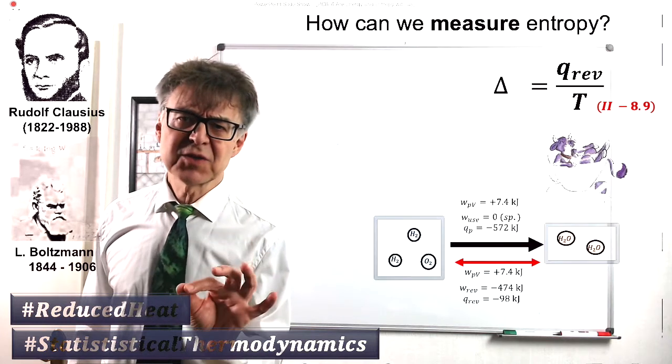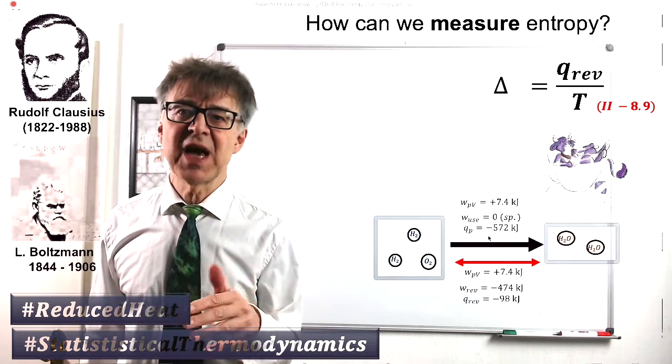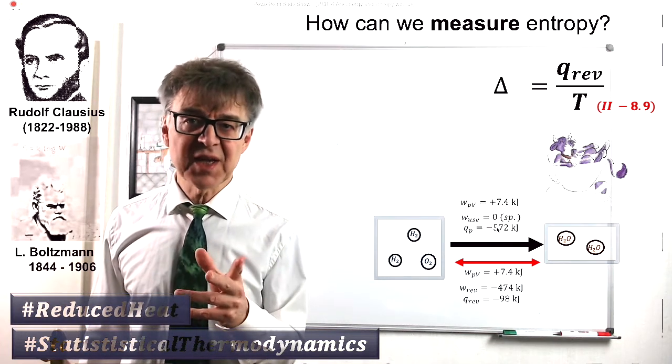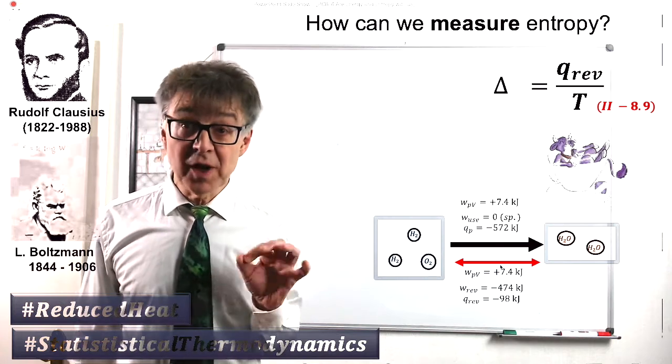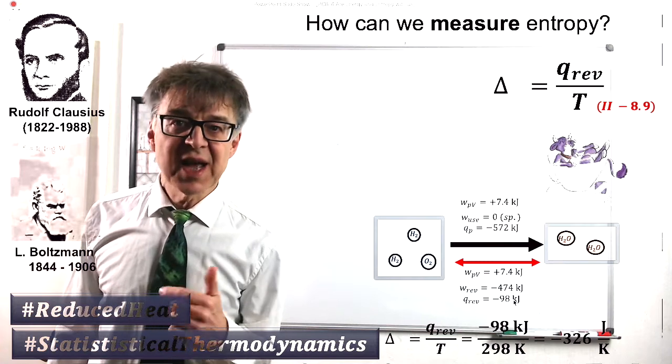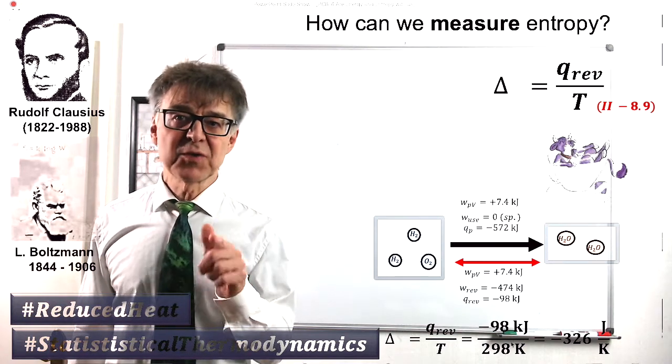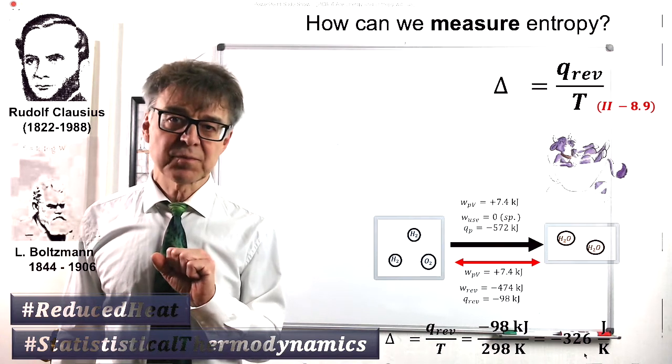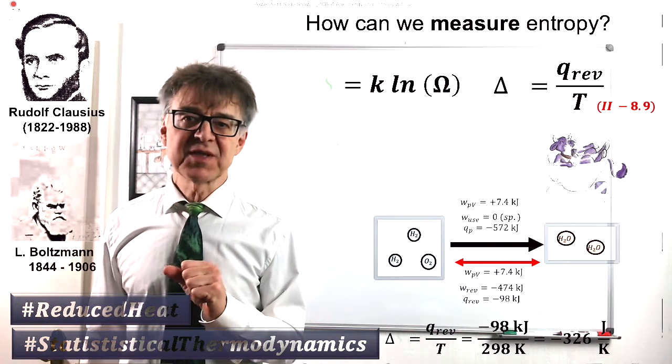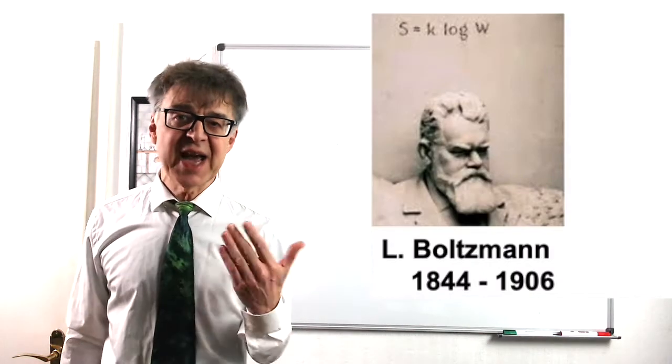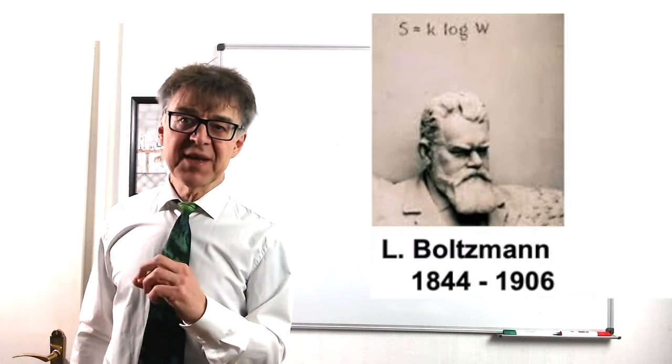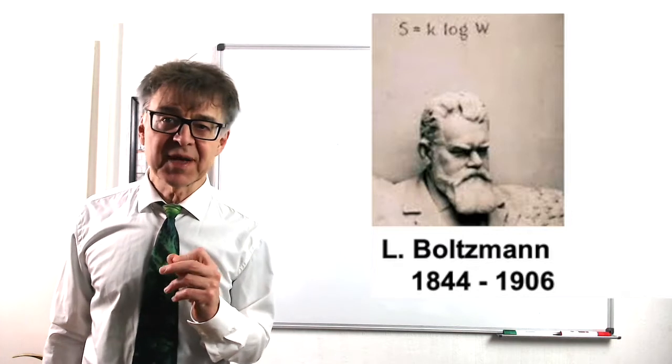The entropy according to Clausius is measured using the reduced reversible heat. The index reversible is sometimes very important. If we carry out the oxyhydrogen gas reaction spontaneously, we have a lot of heat that is released. But that is not the reversible heat that we need. We have to run the oxyhydrogen gas reaction reversibly over a fuel cell, then we get negative 98 kJ as reversible heat. We have to use this heat in Clausius' formula.